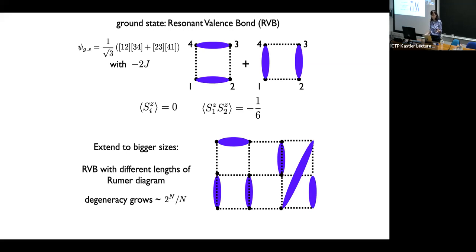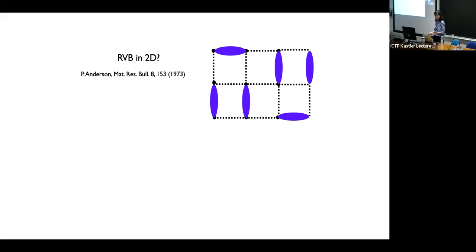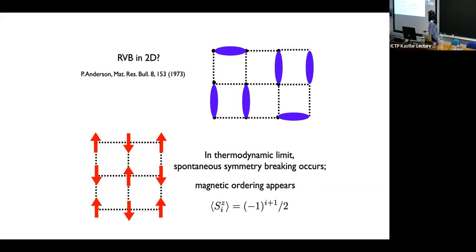One can cover the entire lattice with bond singlets. However, the degeneracy of this type of linear combination of bond singlets grows as 2^N—a thermodynamic growth. This is basically Phil Anderson's proposal of the RVB in dimensions higher than one. The 2D RVB was based on these ideas. But unfortunately, if you have a square lattice in the thermodynamic limit, spontaneous symmetry breaking occurs, and this is why we know that magnetic ordering appears—namely antiferromagnetic ordering. The expectation value takes the form of sublattice magnetic order.